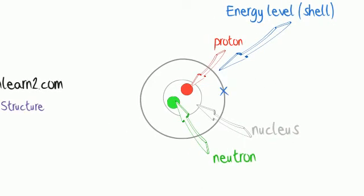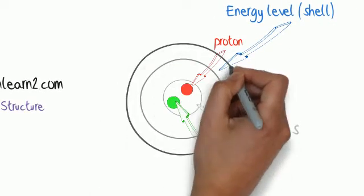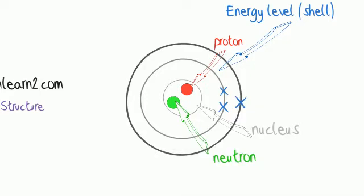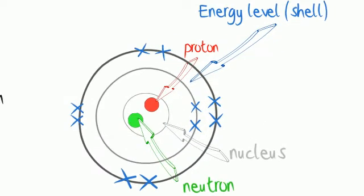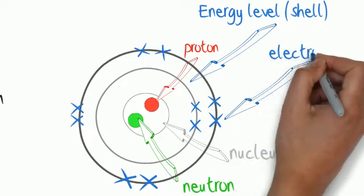The first energy level can hold up to two electrons. The second energy level can hold up to eight electrons. It gets more complicated when we get to the third energy level, which I'll explain in my electron configuration video scribe.